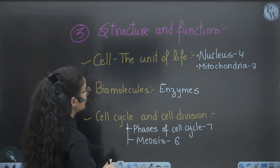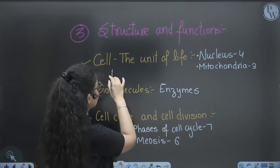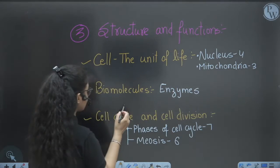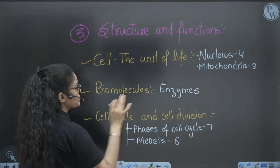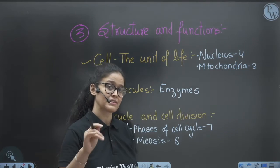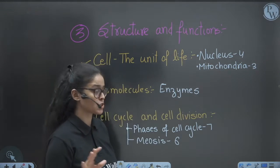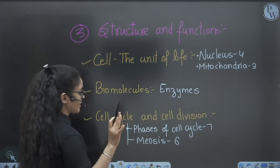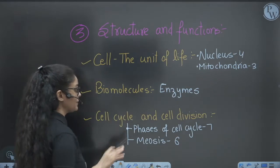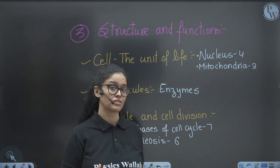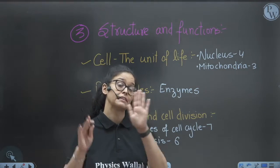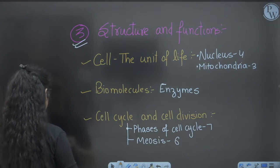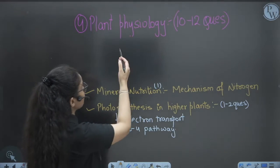The next unit is Cell Structure and Function. From the Cell chapter: Nucleus — four questions; Mitochondria — three questions. From Biomolecules, many questions come from Enzymes, which is always a hot topic. Cell Cycle and Cell Division: phases of cell cycle — seven questions asked in past years; Meiosis — six questions. The weightage of this unit is huge, so you cannot skip it.